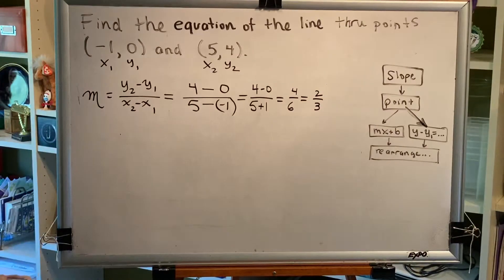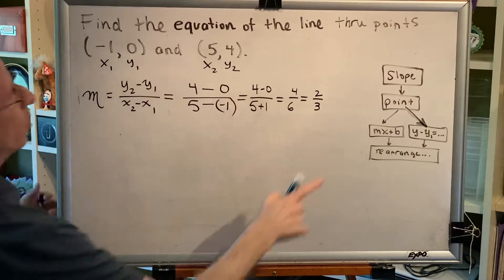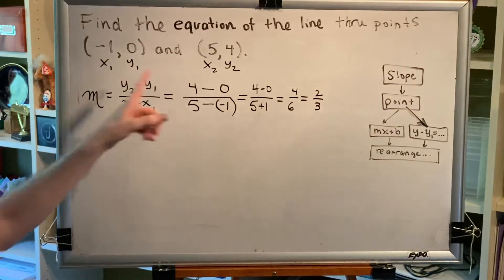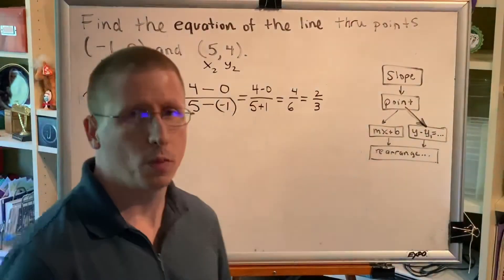So the slope of our line needs to be 2/3. We now know the slope and we're ready to move on to the point. For the first time we now have a decision to make. Which point should we choose?